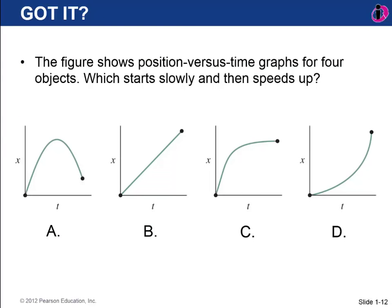Here are four position versus time graphs. Which one shows an object that starts slowly and then speeds up? The answer is D. Graph A starts with a big positive slope — moving forward — then slope goes to zero and reverses: it stops and goes backward. Graph B has a constant slope: uniform motion in the plus x direction. Graph C starts fast with a high slope, then slows to a stop. Graph D starts with a shallow slope that gets steeper and steeper — it starts slow and speeds up.